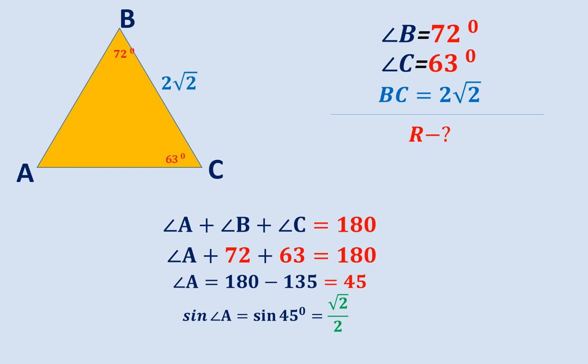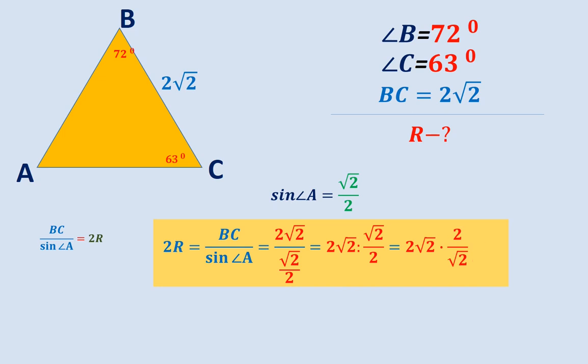Then we get that BC divided by sine of angle A is equal to 2 times R. Let us plug in the values we already know. 2 times R is equal to BC divided by sine of angle A equals 2 square root of 2 divided by square root of 2 over 2, and here we need to make calculations and finally we get 4.